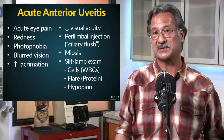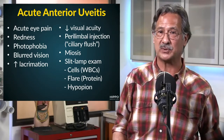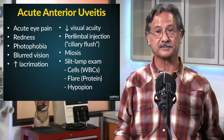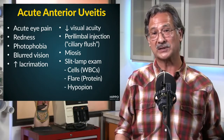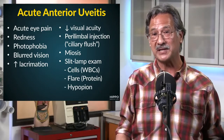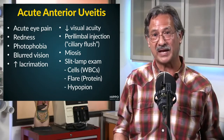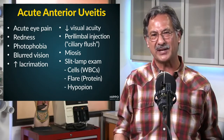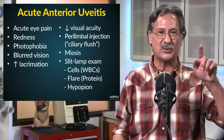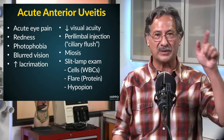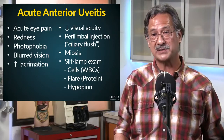For physical exam findings, we see a decrease in visual acuity. We also see what's called perilimbal injection or ciliary flush — that's an increase in vasculature that we see right around the corneal limbus. We also see miosis.